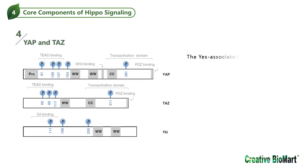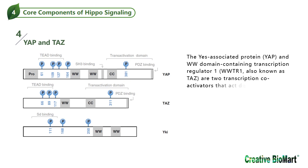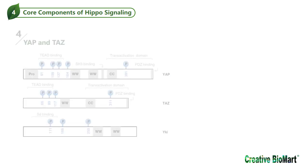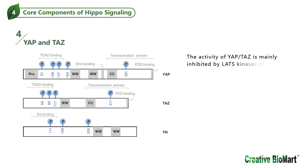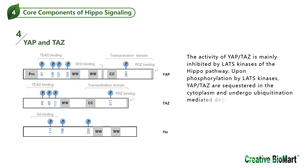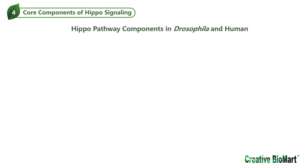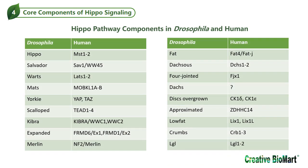The Yes-associated protein YAP, and WW-domain-containing transcription regulator 1, WWTR1, also known as TAZ, are two transcriptional co-activators that act downstream of the Hippo tumor suppressor pathway. YAP and TAZ regulate expression of a large number of genes that are important in controlling organ size, tumorigenesis, and stem cell functions. The activity of YAP and TAZ is mainly inhibited by LATS kinases of the Hippo pathway. Upon phosphorylation by LATS kinases, YAP and TAZ are sequestered in the cytoplasm and undergo ubiquitination-mediated degradation. YAP and TAZ are also inhibited by interaction with cell junction proteins. The corresponding Hippo pathway components in Drosophila and human are shown in the table.